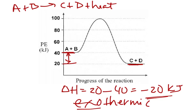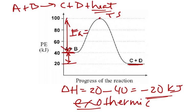For endothermic reactions, the heat would be on the left side of the equation. Here's our transition state. So we can see our activation energy — again, it'll be positive, 100 minus 40. So E sub A is going to be 60 kilojoules. So we have products, we have reactants, transition state, delta H, and activation energy.